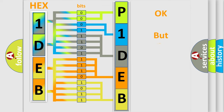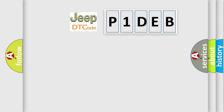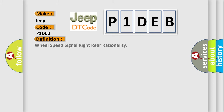We now know in what way the diagnostic tool translates the received information into a more comprehensible format. The number itself does not make sense to us if we cannot assign information about what it actually expresses. So, what does the diagnostic trouble code P1DEB interpret specifically for Jeep car manufacturers? The basic definition is: Wheel Speed Signal Right Rear Rationality.